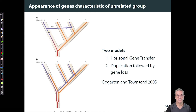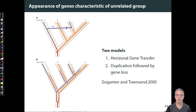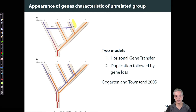In the top figure, this shows the effects of horizontal gene transfer. In this case, we have a simple series of speciation events, but the gene under consideration is lost in the lineage leading to species C.